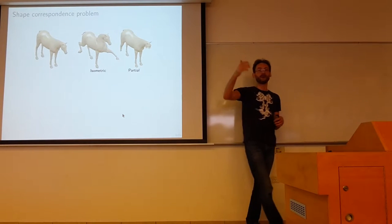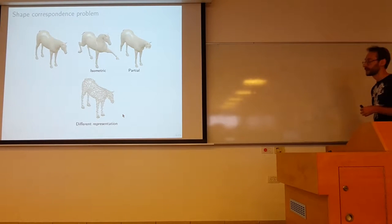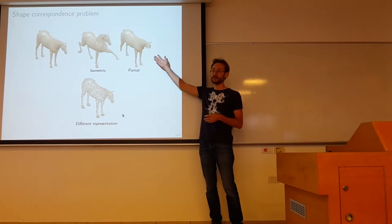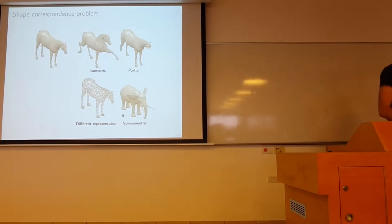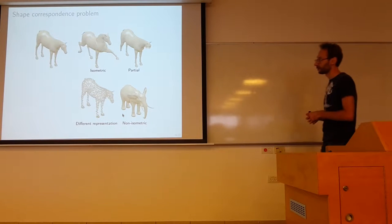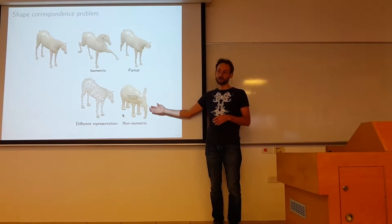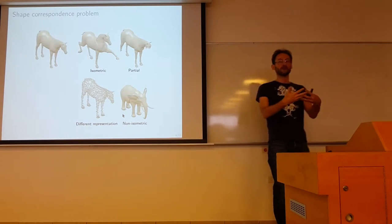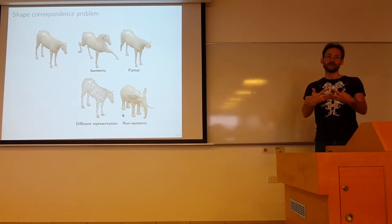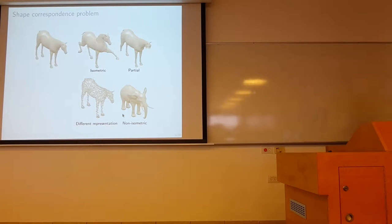The problem becomes more complicated with real data. When we acquire shapes in the real world, we get occlusions and missing parts — I don't see my back when I stand in front of a 3D scanner. We may also want to deal with different representations: a computer graphics model can be represented as a mesh, while in computer vision what comes out of sensors is a point cloud. And we can talk about non-isometric matching — for example, finding correspondence between a horse and an elephant, where it's even hard to define what a correct correspondence would be. This problem also involves topology problems when we change the genus of the surface, because of scanning artifacts.